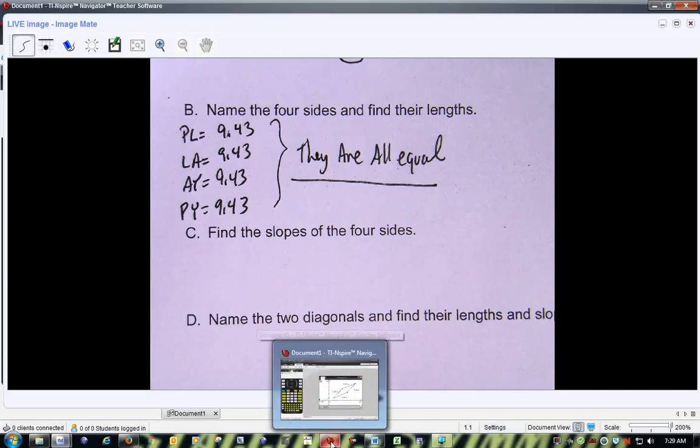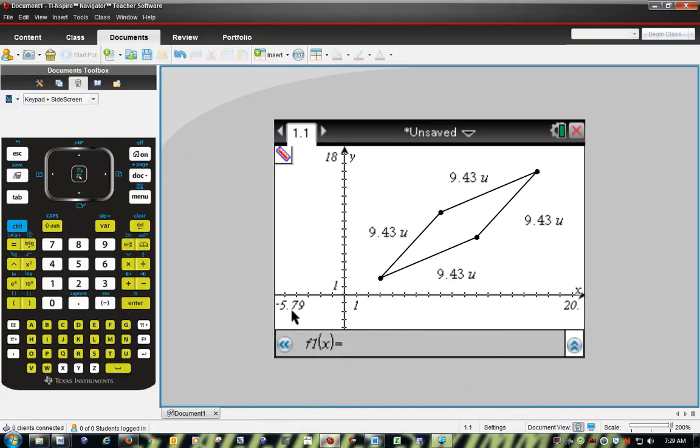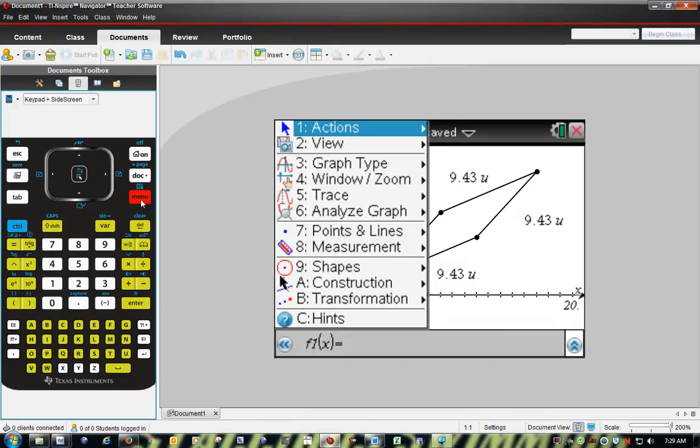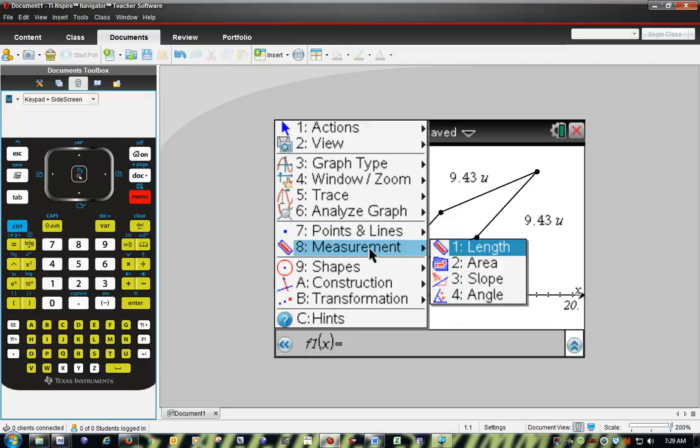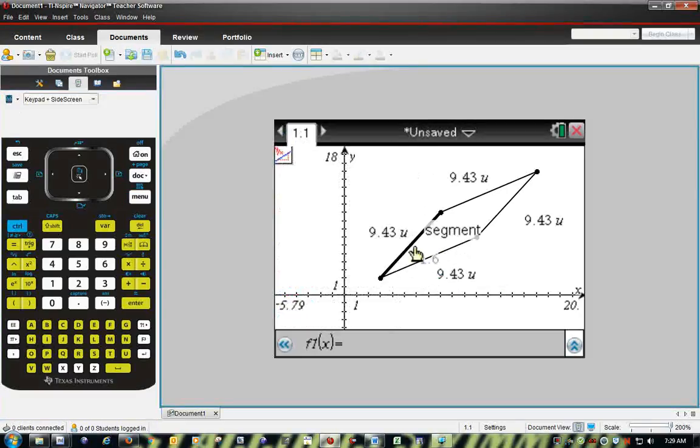Again, your calculator can do this for you. Go to menu, measurement, and slope. You click on the side, then you place it over here. I've got a 1.6. Over here...